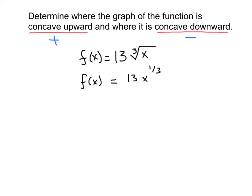So the first derivative, we're going to bring that 1 third down, multiply by 13, and get 13 thirds, and then we subtract 1 and get negative 2 thirds for the exponent.